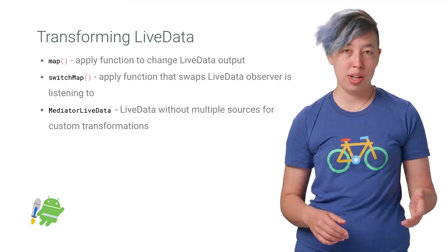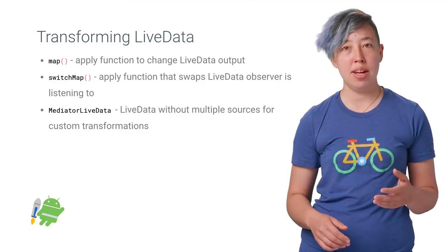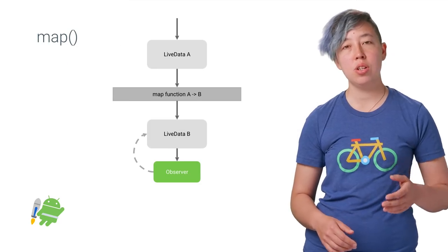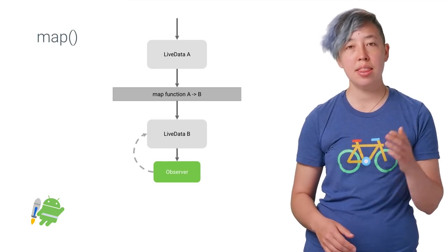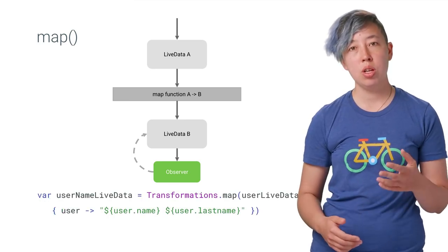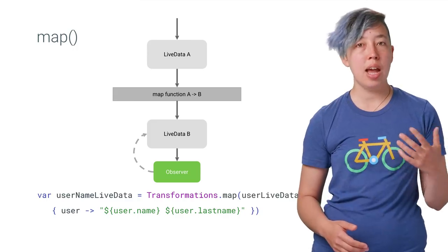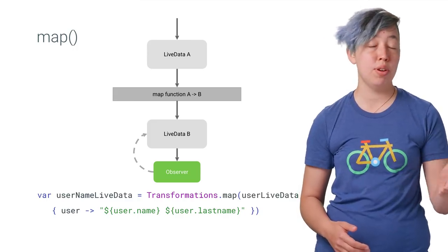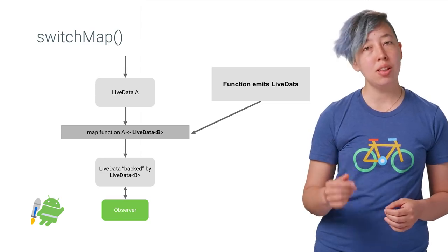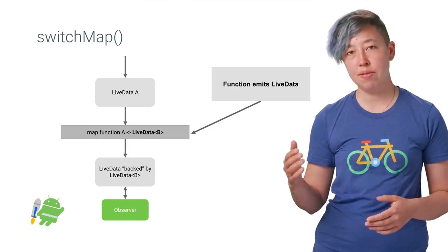LiveData also provides transformations, including Map, SwitchMap, and a class called MediatorLiveData for custom transformations. Map lets you apply a function to the output of LiveData A and propagate the results downstream to LiveData B. For example, you can use LiveData to take a user object and instead output a string of the user's combined first and last name. The SwitchMap function transformation is a lot like Map, but for mapping functions that emit LiveData instead of values.